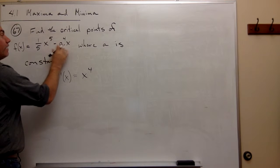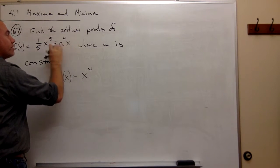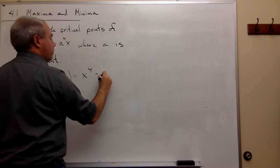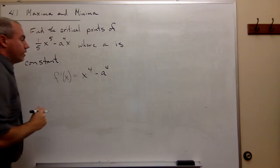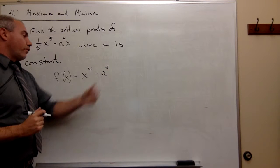Well, remember that negative a to the 4th, that's just a constant. So if this were negative 3x, it would just be negative 3. So if it's negative a to the 4th x, it's just minus a to the 4th. So we've got our derivative as x to the 4th minus a to the 4th.